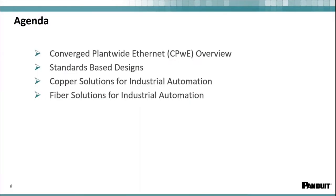What we're going to cover today: the first slide covers CPWE — for those who don't know, that stands for Converged Plant-Wide Ethernet, basically a plant-wide Ethernet layout. It talks about best practices from the plant floor all the way up to the enterprise level within the factory. We'll touch on standards, specifically TIA-1005 standards, and then dive into the product level — copper and fiber optic on the plant floor.